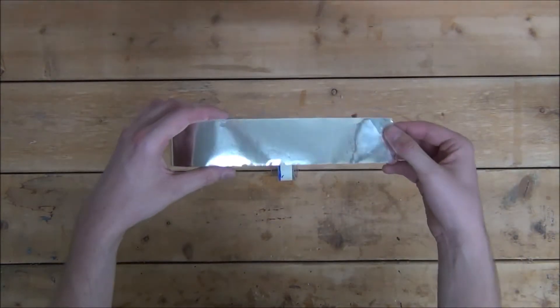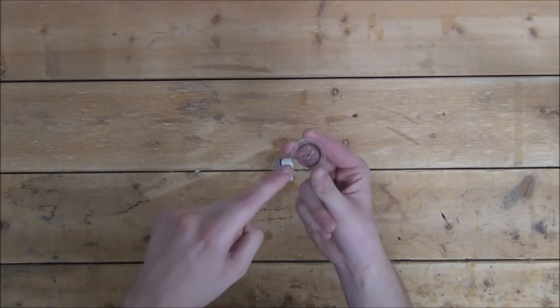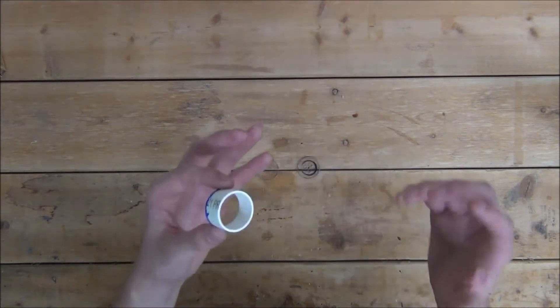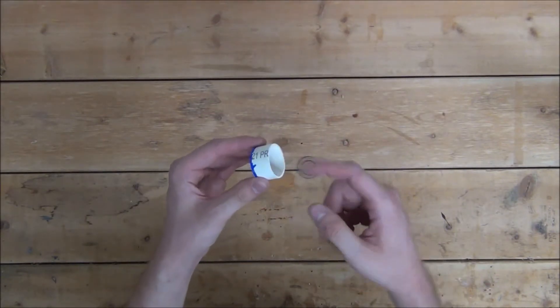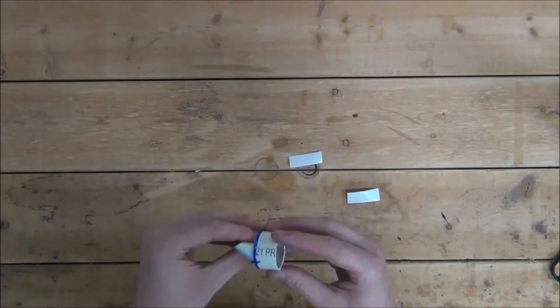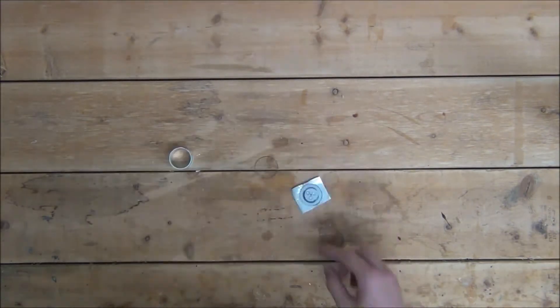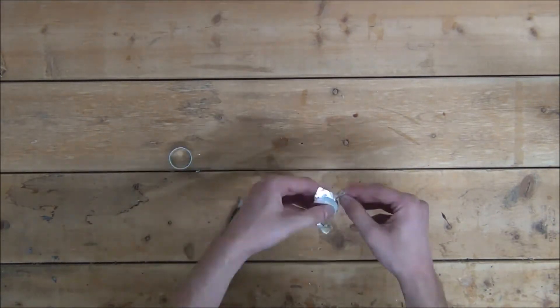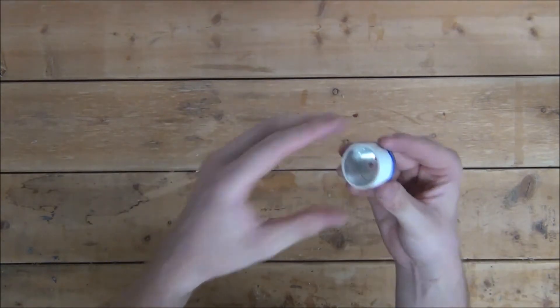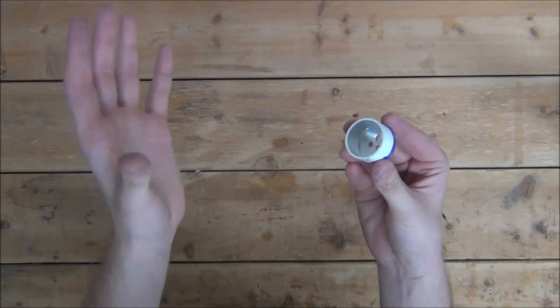First, we'll want to take some reflective metal repair tape and tape the top of the Lexan piece that we drilled the holes in and the inside of the PVC spacer. And we do this so the reflectiveness of the tape can help focus the light beam.